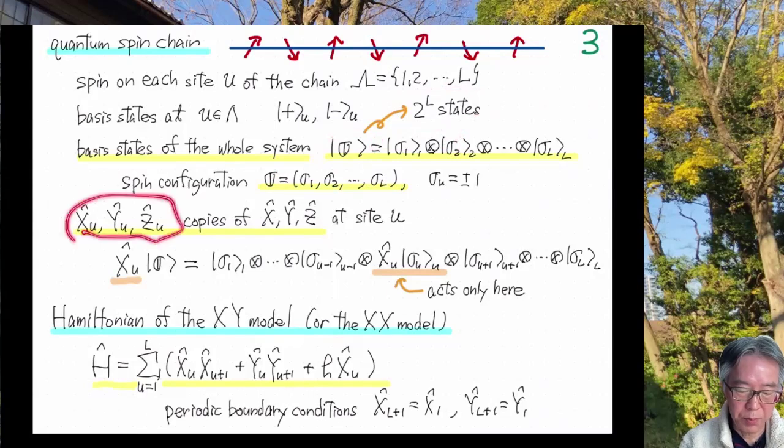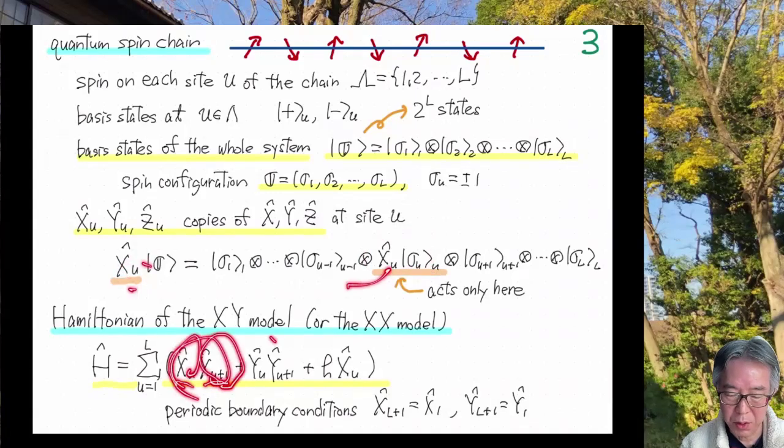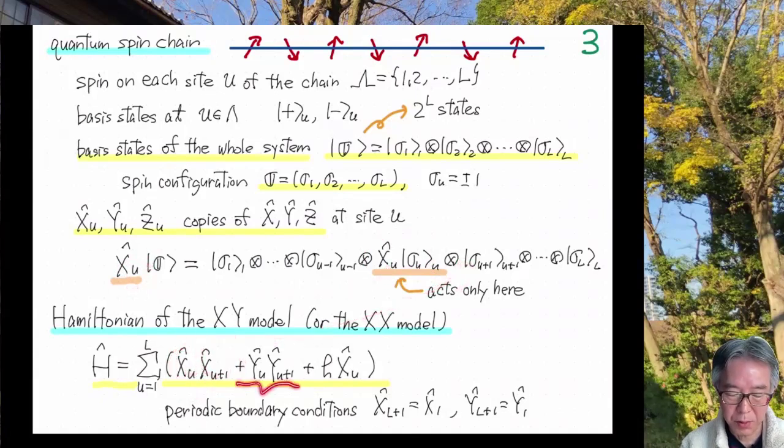And these are the copies of Pauli matrices at site u. So, I mean, if you have x hat u and if it acts on this basis state, then this guy ignores everybody else and simply goes to the basis state on this site and acts on here. And so this is the Hamiltonian of this XY model. Now I have x u, x u plus 1. This means this guy acts here and this one acts only on here. The same thing for here and this is the same. So I sum over all u. So this means that site 1 and 2 interact and site 2 and 3 interact and so on. So the model has nearest neighbor interaction.